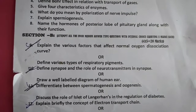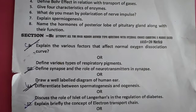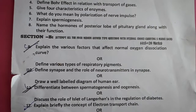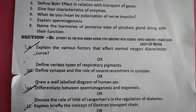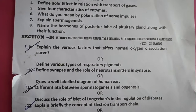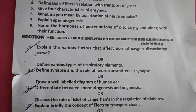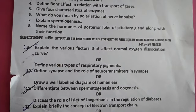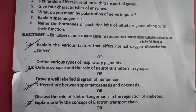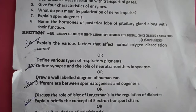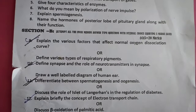Section B. Attempt all 4 medium answer type questions with internal choice, carrying 5 marks each. Question 9: Explain the various factors that affect normal oxygen dissociation curve. Or, define various types of respiratory pigments.